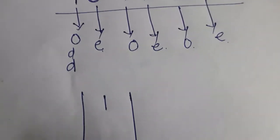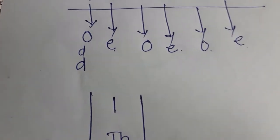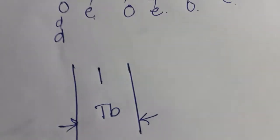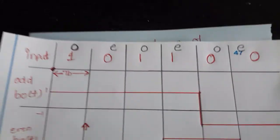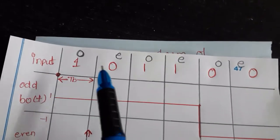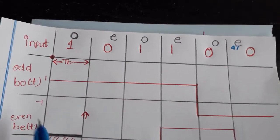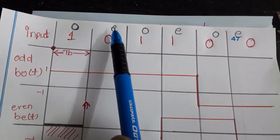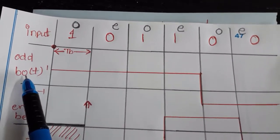The first data that comes is 1. The duration of the data is given by TB. The input is 101100, divided into odd, even, odd, even, odd, and even. First I am bothered about the odd component.